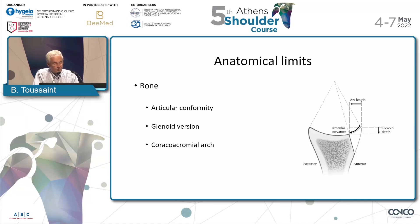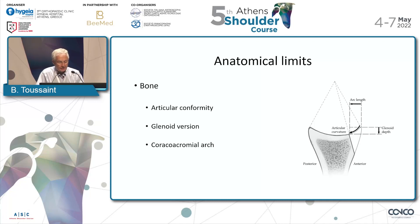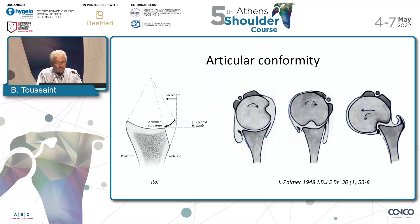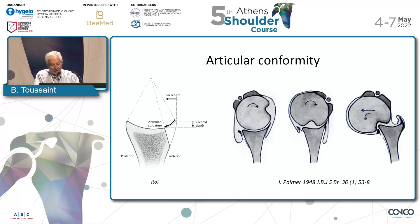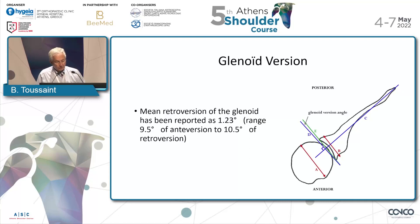Anatomical limits are very important to know. Articular conformity is very important — it was beautifully described by Itoi with the articular curvature and the deepness of the glenoid side. Palmer, in 1948, already spoke about articular conformity regarding humeral bone defect. Glenoid version is important but definitely less so. If you have a big anteversion or retroversion, you increase the risk of failure of a soft tissue procedure.